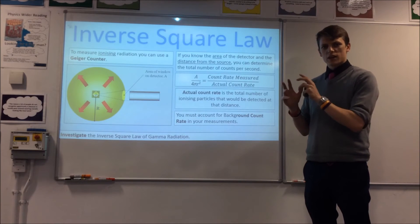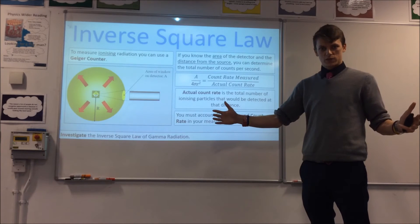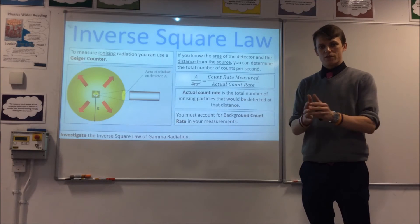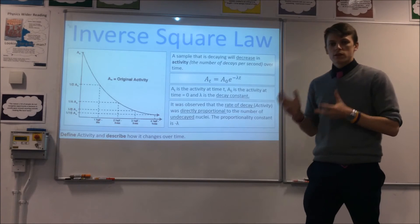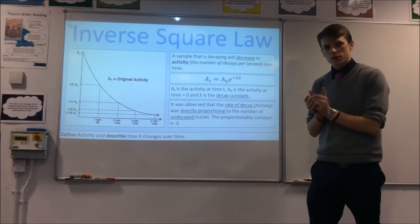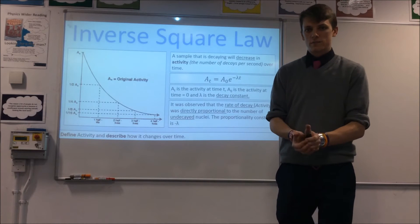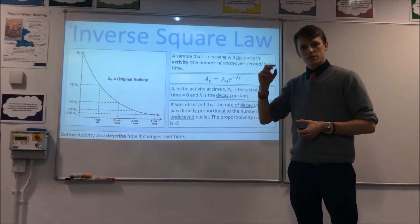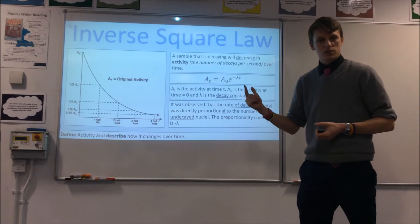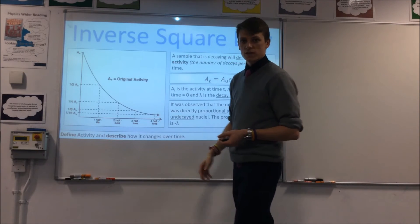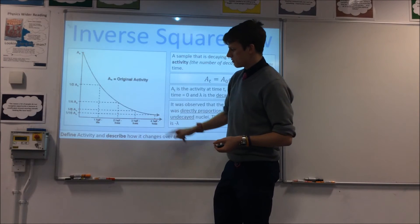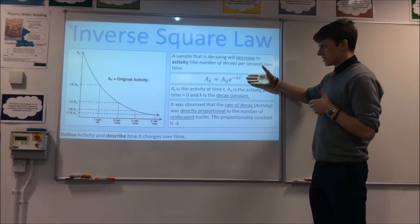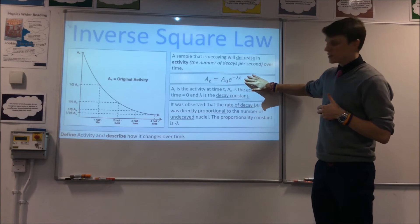That's the inverse square law of gamma radiation. Now let's look at how the activity of a source changes over long periods of time — over years, for instance. Scientists noticed that if you had a radioactive source and left a detector set up, the count rate or activity — the number of decays per second — actually decreases over time. If you measure it over a long period you get a curve showing this decay, and they determined it can be expressed as an exponential relationship with time.